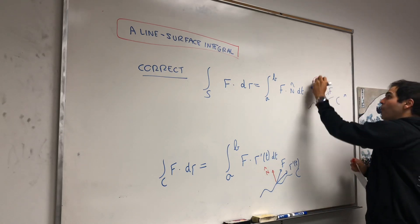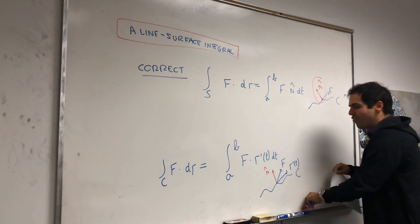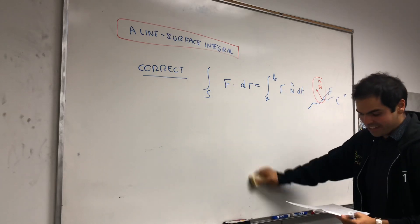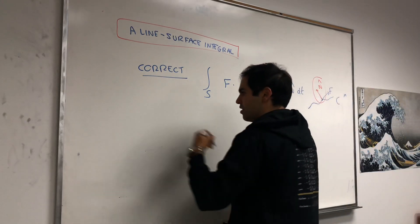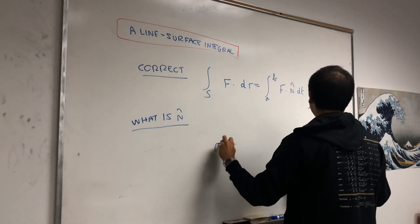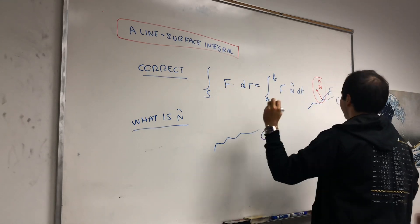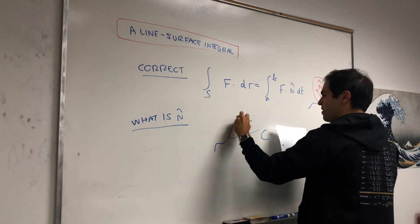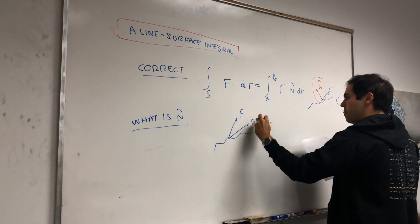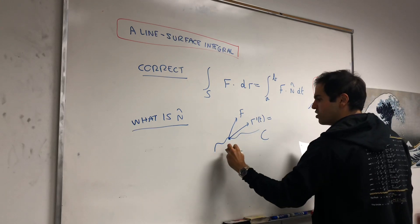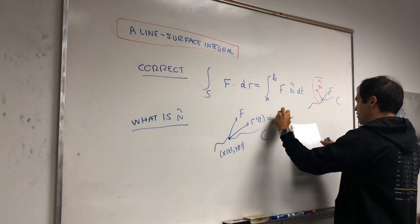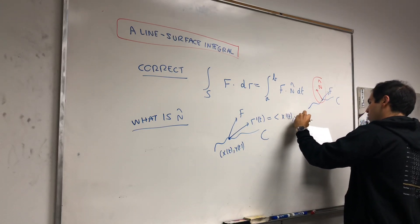The question is: what is n̂ and how can we find a formula for it? Fortunately it's not too bad because we're in basically one dimension. We have our curve C and our vector field F, and we have the direction vector r'(t). If you parameterize the curve as (x(t), y(t)), then r'(t) is just the vector of derivatives: (x'(t), y'(t)).